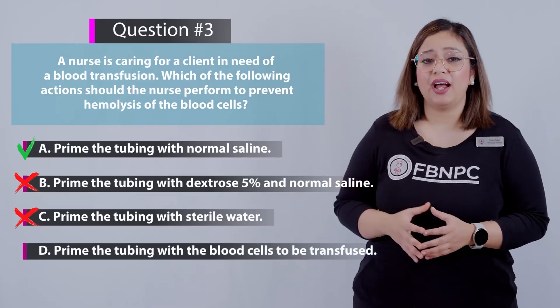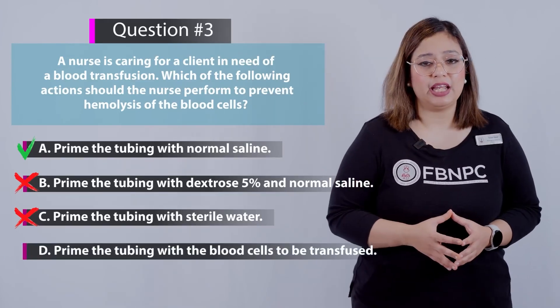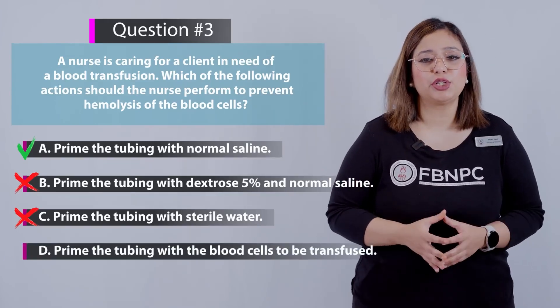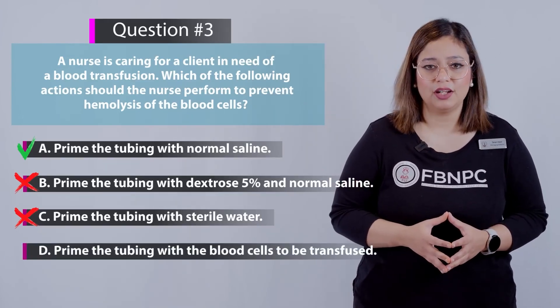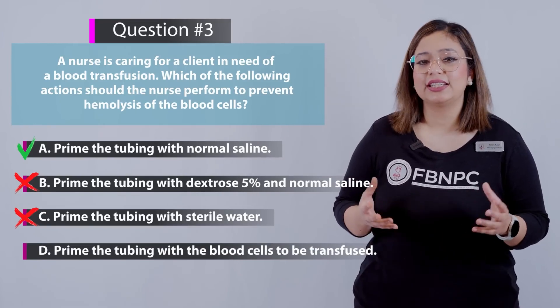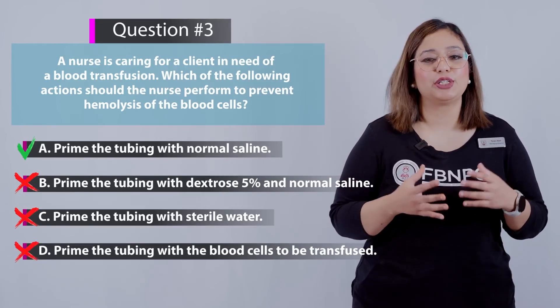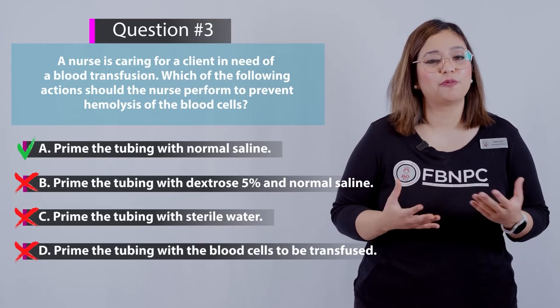Option D: priming the tubing with the blood cells to be infused. This is incorrect because the tubing should be primed with normal saline.